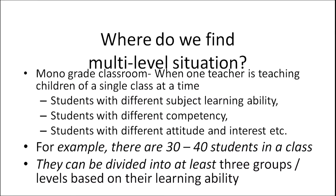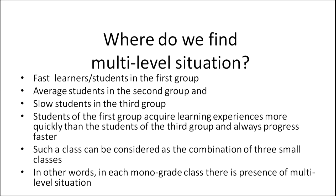In a mono-grade classroom where one teacher is teaching children of a single class, students have different subject learning abilities, different competencies, and different attitudes and interests. For example, if there are 30 to 40 students in a class, they can be divided into at least three groups based on learning ability: the first group is fast learners, the second group is average students, and the third group consists of slow students who take more time to understand a concept.